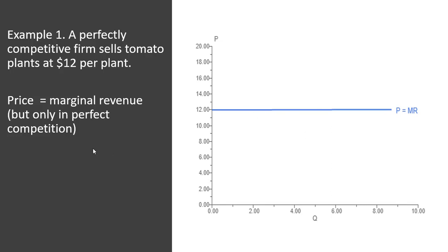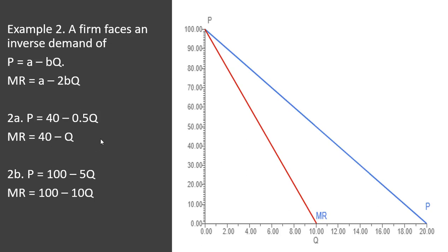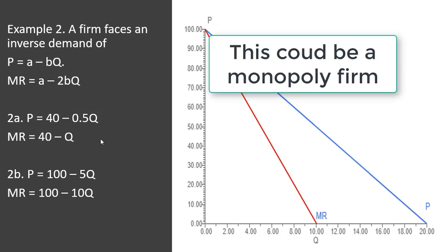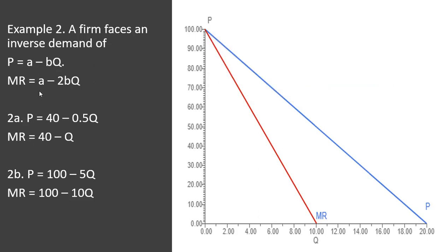All right, moving on to example two. We're going to look at a firm that faces a downward sloping demand curve. So just first in general notation, the firm faces the following inverse demand, where price equals A minus BQ. What is marginal revenue?